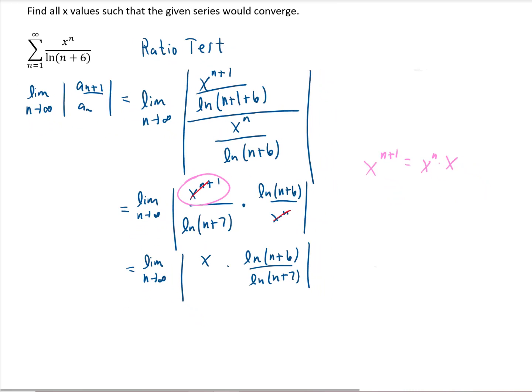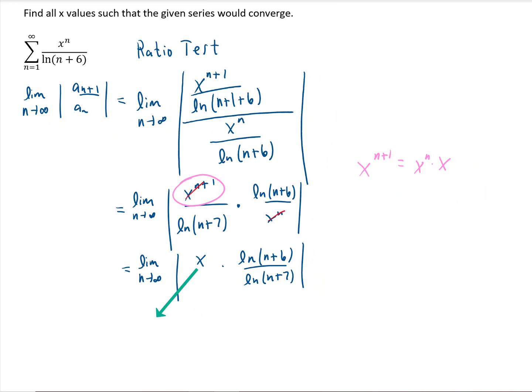Now, when we're taking the limit of this as n approaches infinity, x isn't changing, so we can just think of this x as being outside of that limit if it's convenient. And you'll notice as n goes to infinity, the numerator goes to infinity, and the denominator goes to infinity. That is an indeterminate form, so what we're going to do is use L'Hopital's rule, which says that we can take the derivative of the numerator separately from the derivative of the denominator.